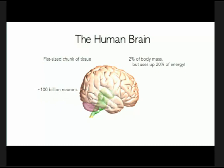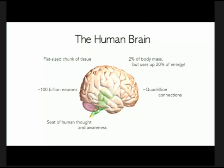The brain comprises about a hundred billion neurons — those are the elemental computational units or cells inside the brain. It has on the order of thousands of trillions of connections between these neurons; each neuron on average has about ten thousand connections. We're looking at astronomical numbers: 100 billion neurons, a quadrillion connections.